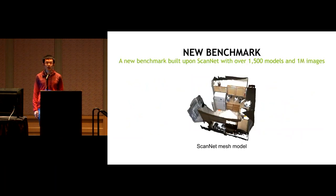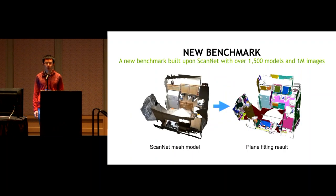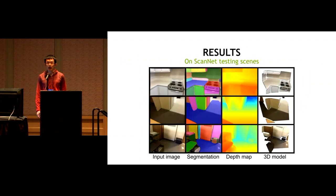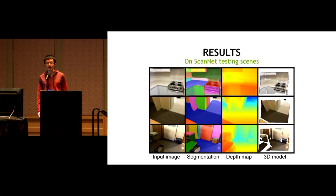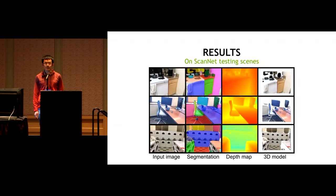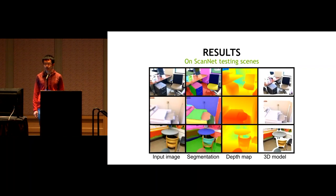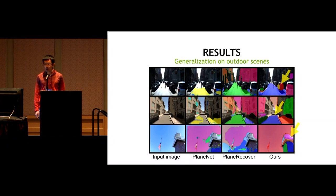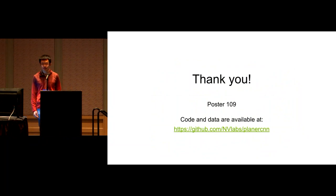To generate training data, we fit 3D planes to 3D mesh models from ScanNet and project results to each camera view. Our method robustly reconstructs most planar regions, and quantitatively outperforms all existing methods by a large margin. Although trained only on indoor images, it generates reasonable results for outdoor scenes, as the detection backbone improves generalization ability.